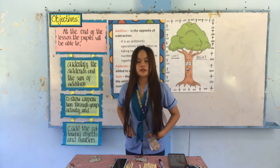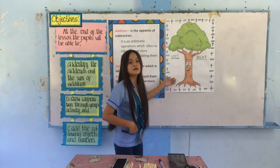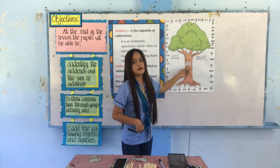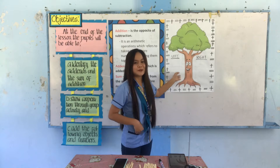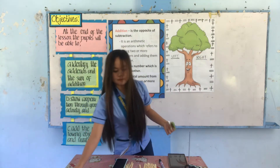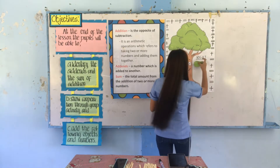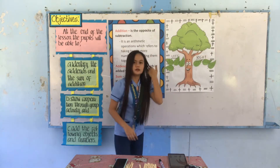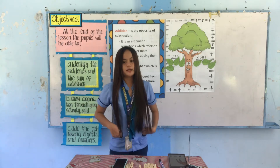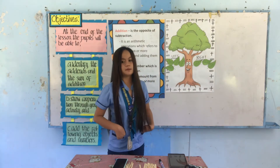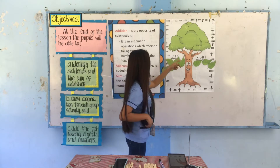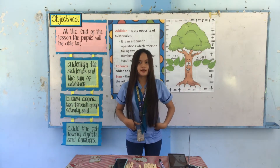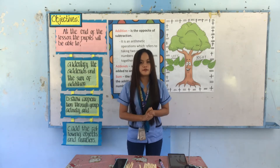So now let's do an activity. I have here a big picture of a tree. I want some representatives to go in front and paste a leaf on the left and right side of the tree. Let's count one by one how many leaves were pasted on both sides of the big tree: one, two, three, four, five, six, seven. How many leaves are on the tree? It's seven. Very good.